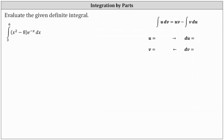We're asked to evaluate the given definite integral. Before we consider the definite integral though, let's determine the antiderivative by considering the indefinite integral of the quantity x squared minus eight times e to the negative x dx.